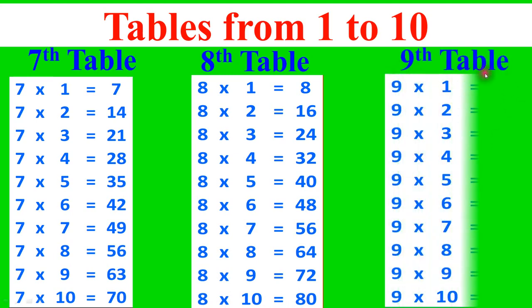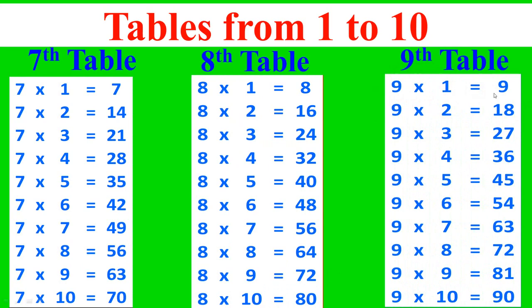9th table: 9 times 1 equals 9, 9 times 2 equals 18, 9 times 3 equals 27, 9 times 4 equals 36, 9 times 5 equals 45, 9 times 6 equals 54, 9 times 7 equals 63, 9 times 8 equals 72, 9 times 9 equals 81, 9 times 10 equals 90.